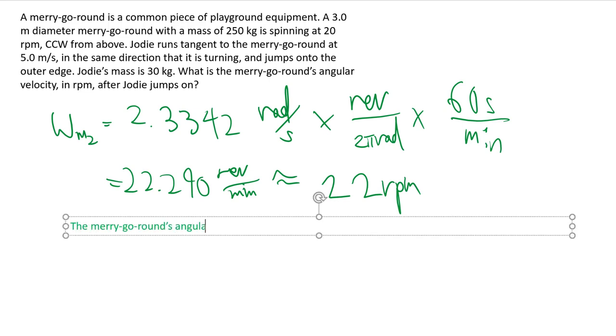Here they ask us angular velocity, so we do need not just the magnitude but the direction as well. Everything was happening counterclockwise before. There's no reason for it not to be counterclockwise. Everything was positive and stayed positive.